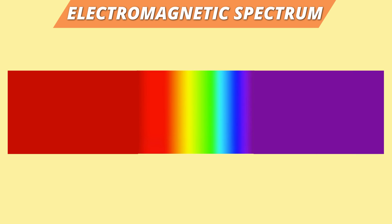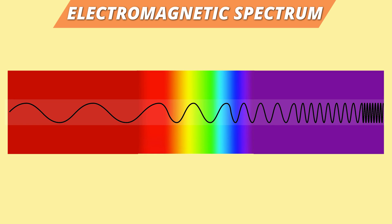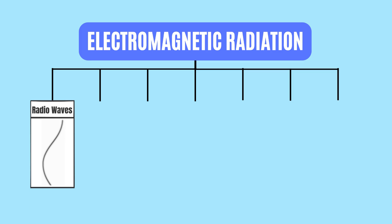The electromagnetic spectrum includes a range of different types of electromagnetic radiation, which is energy that travels and spreads through space. The spectrum includes seven different types of electromagnetic radiation: radio waves,